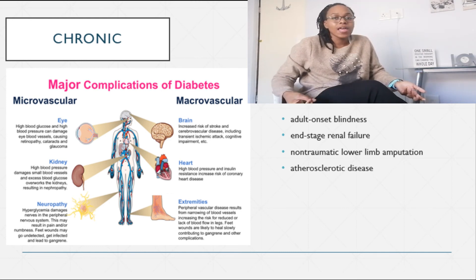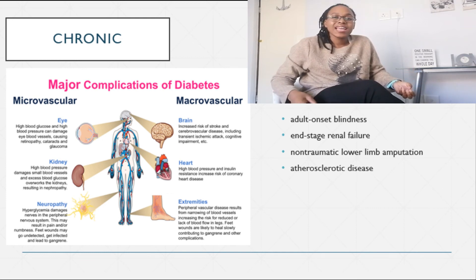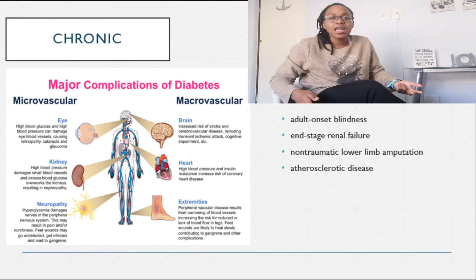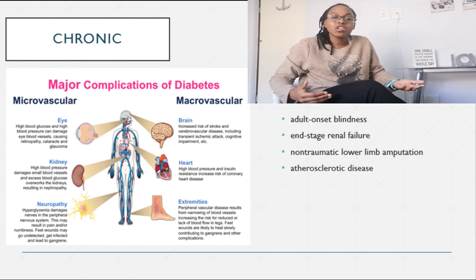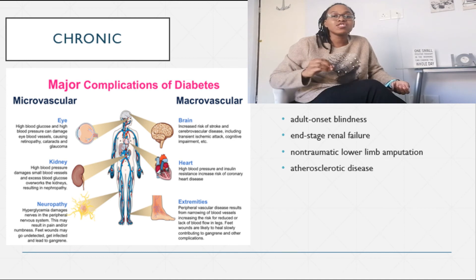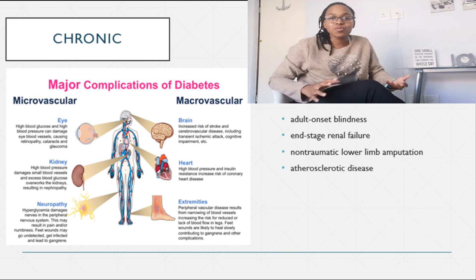Chronic complications happen over a period of time, mainly three months or more. The general ones you're likely to see with a diabetic person are adult onset blindness, lower limb amputation not due to traumatic activities, end-stage renal failure or kidney failure, and atherosclerotic disease, which is plaque formation in your arteries. The reason for this is the metabolic changes that happen to your arteries in different parts of your body because of the excess glucose.